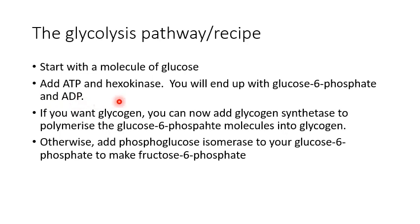With glucose-6-phosphate you can make glycogen. To make glycogen you add glycogen synthetase, which takes glucose-6-phosphate and binds them together with glycogen to make glycogen strands in the muscle. Although it's not part of the glycolytic pathway, it's useful to understand where glycogen comes in: to make glycogen you convert glucose into glucose-6-phosphate, and glucose-6-phosphate can then be polymerized into glycogen.